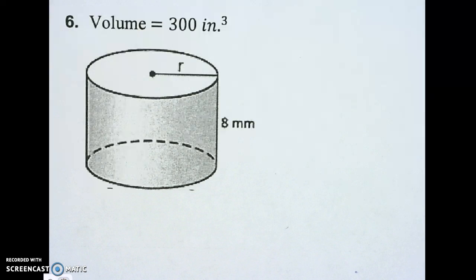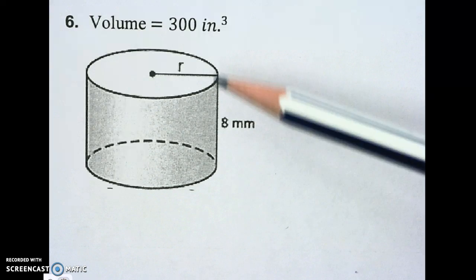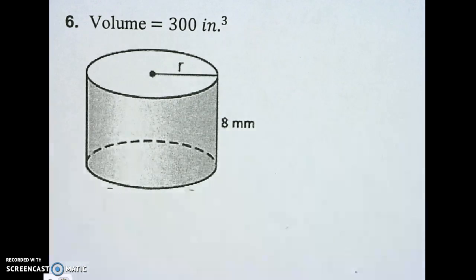All right, let's do some more math. We're going to find the missing dimension on this cylinder. We're going to find the radius.